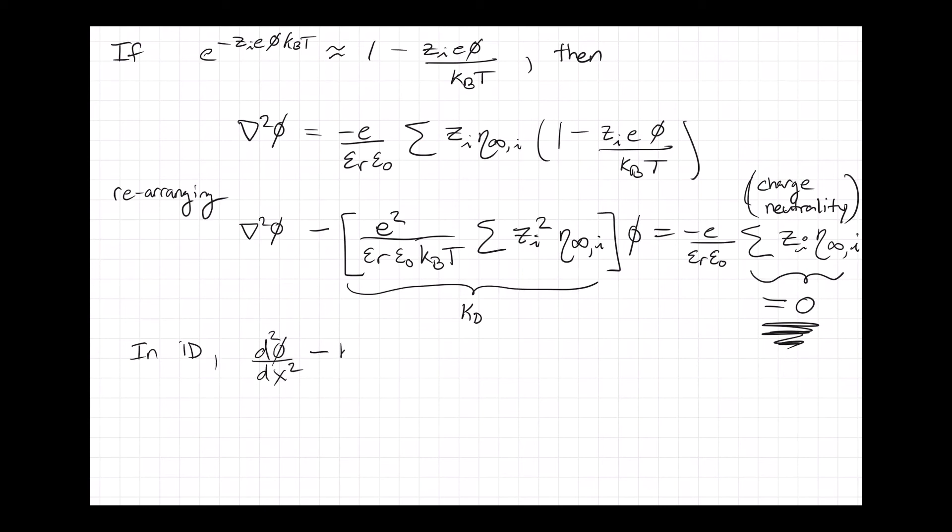Oh I think I've made a mistake up here. So underneath that bracket term I wrote KD but that should actually be something called KD squared. Anyway, if I write this all out in one dimension...